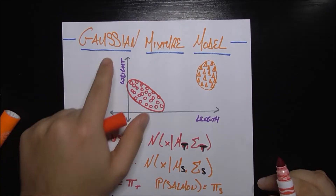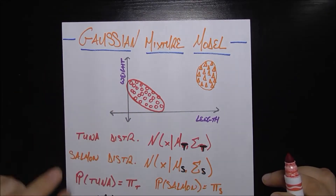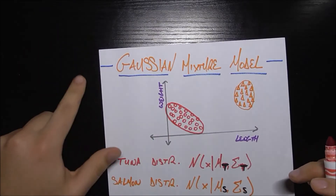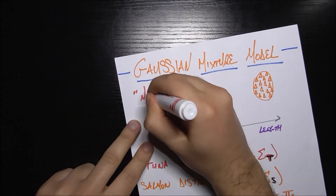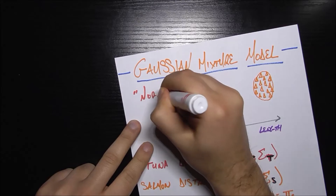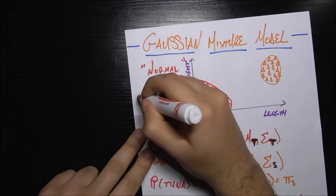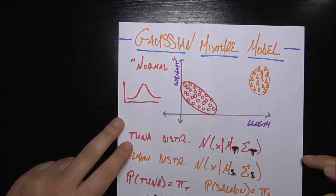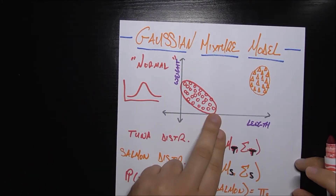That's where the Gaussian mixture model comes in. This model assumes that our classes are distributed in a Gaussian distribution. If the word Gaussian isn't familiar, you're probably more familiar with 'normal.' A normal distribution, which occurs all the time in statistics, is that classic bell curve — except here, this is in two dimensions.